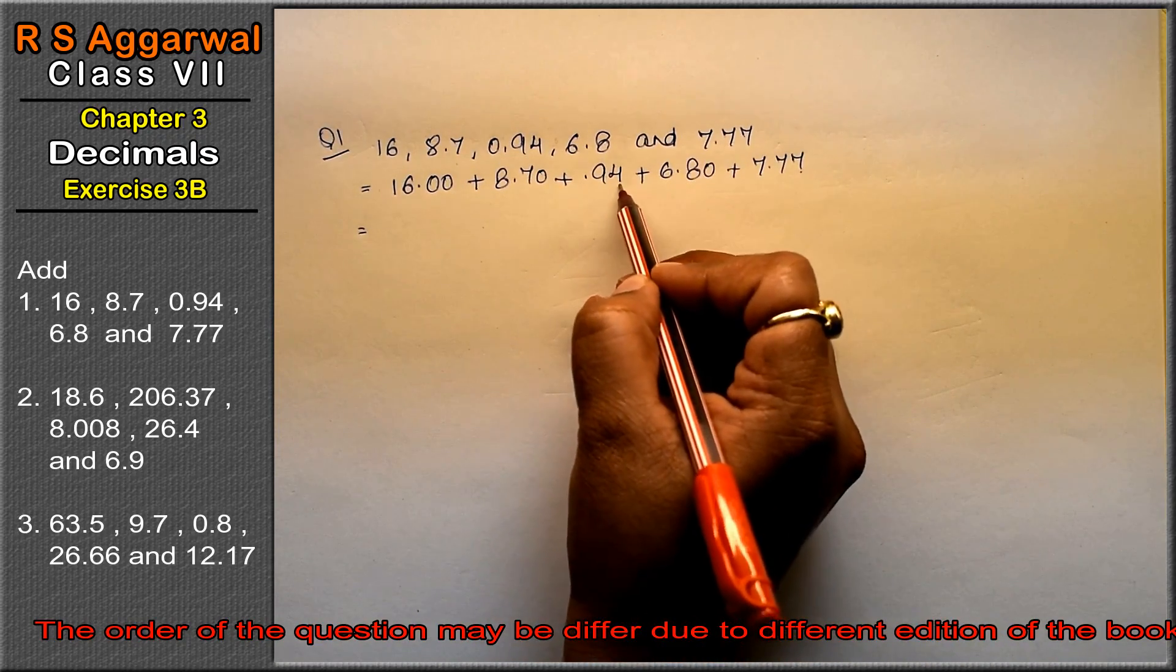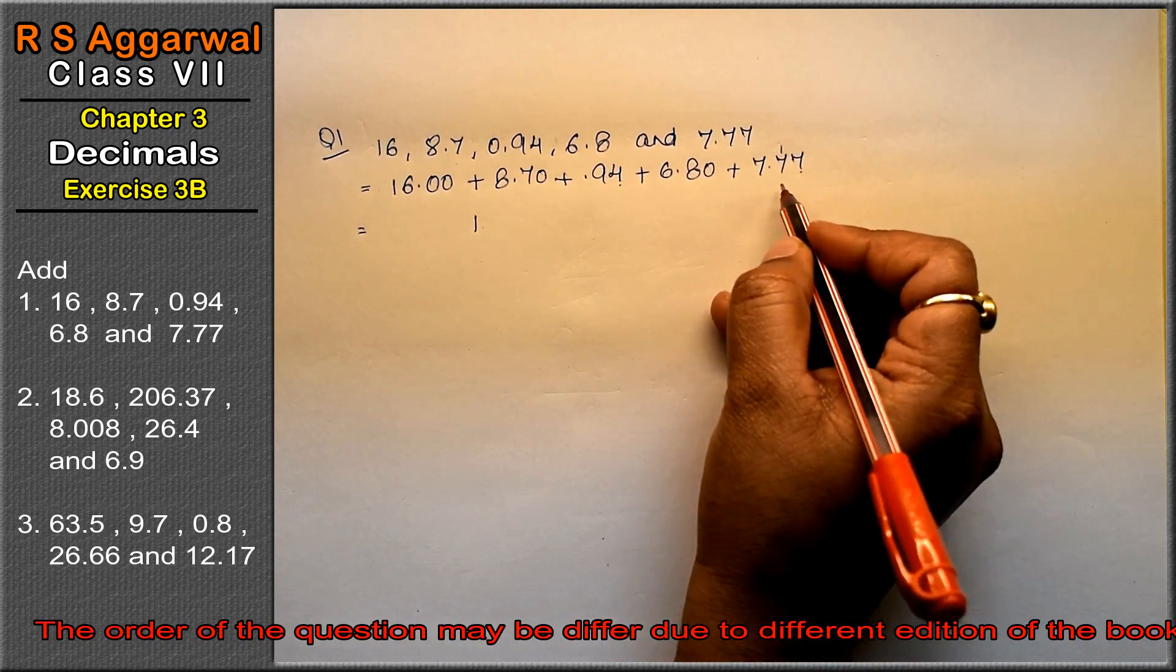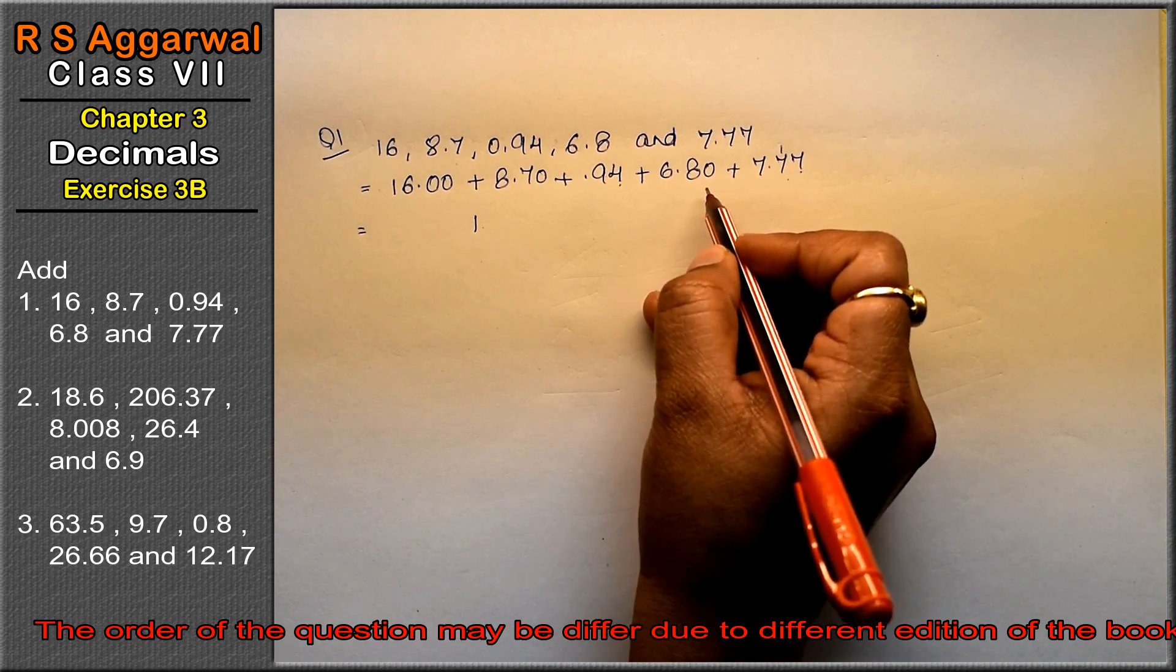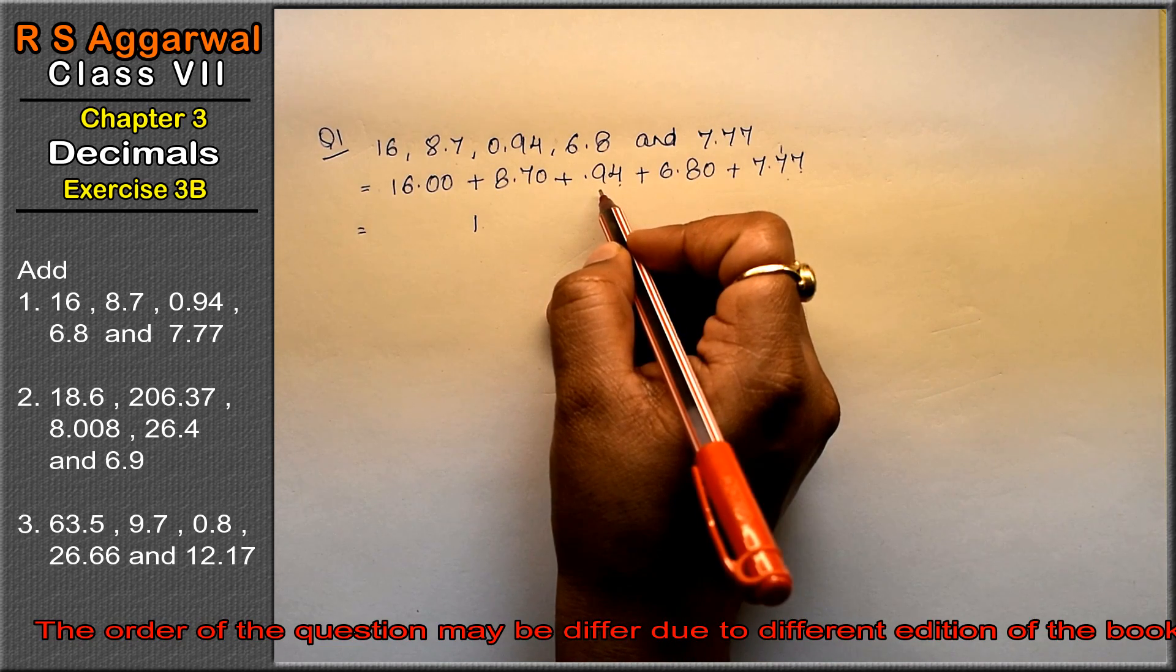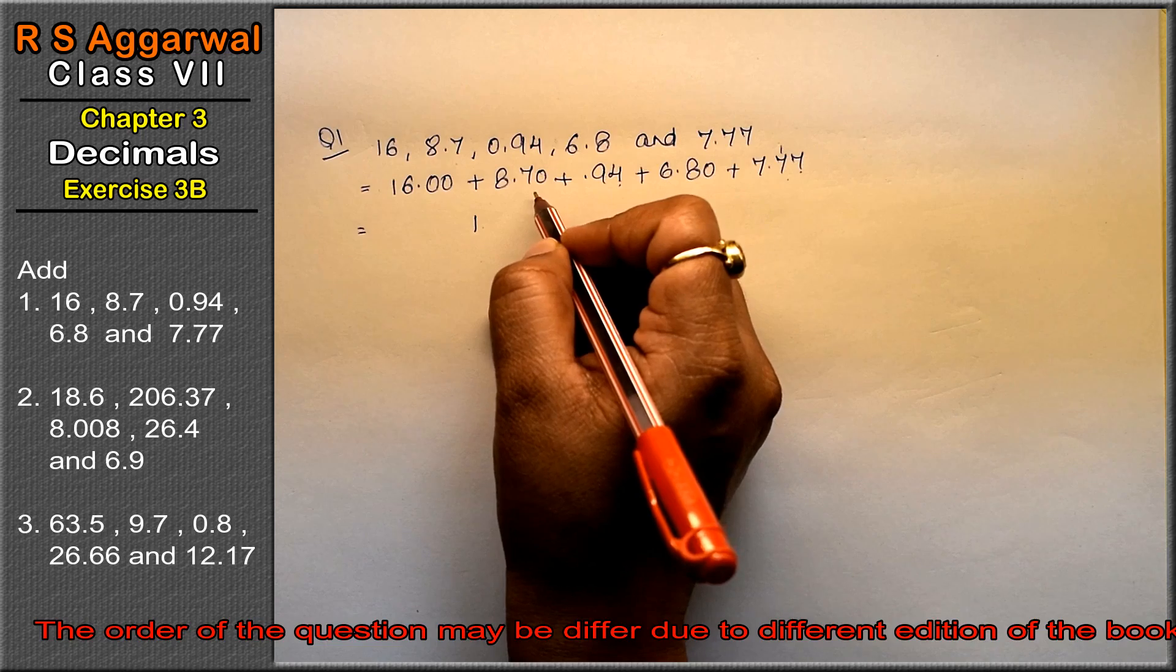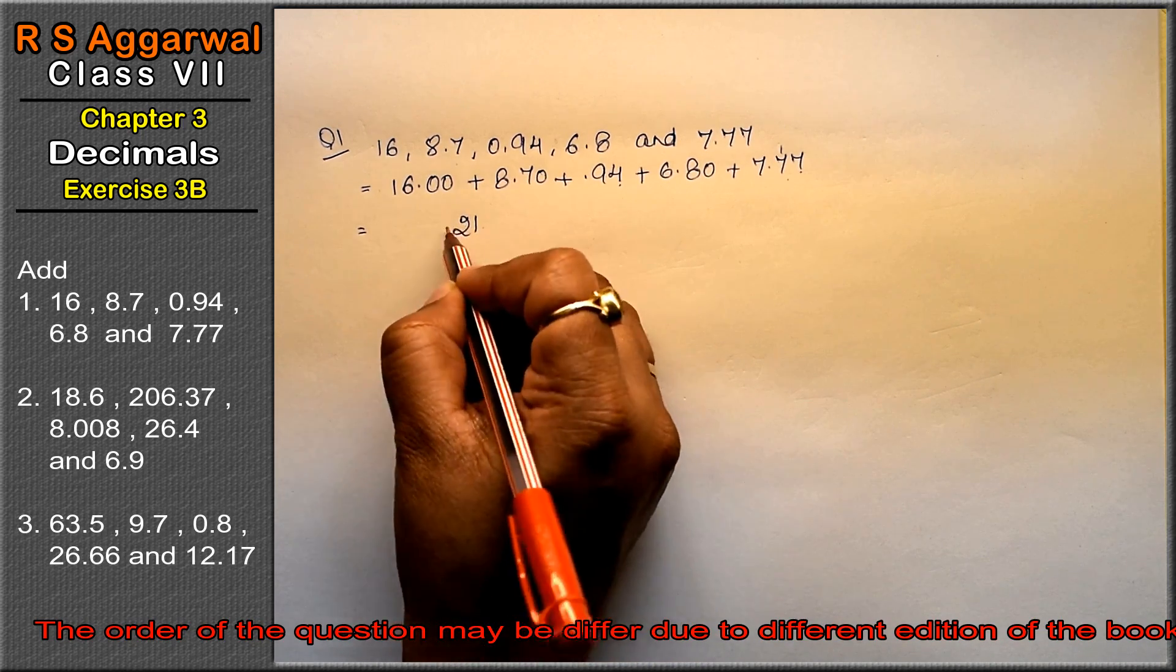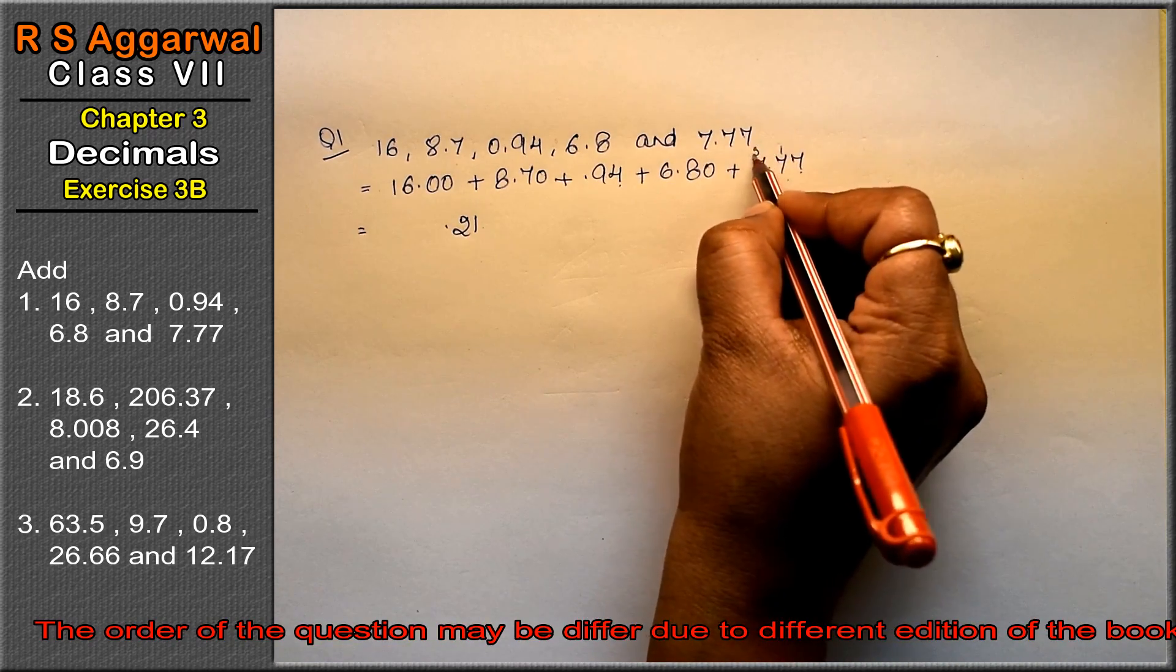Now, 7 plus 4 is 11, 1 carry. 8, 8 and 8 is 16, 16 plus 9 is 25, 25 plus 7 is 32, 32 carry 2. Point 3 carry.